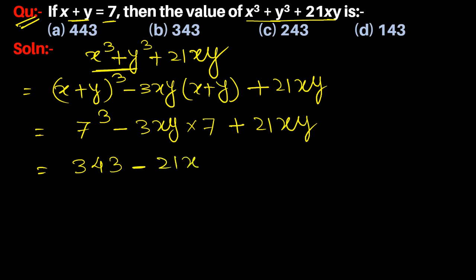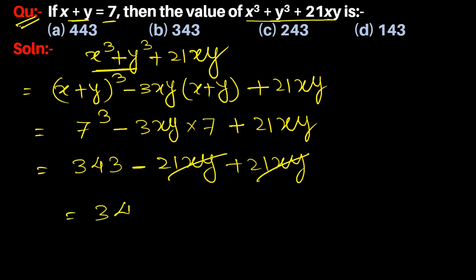So the minus 21xy and plus 21xy cancel each other out, and 343 is our required answer. So option B is the correct answer.